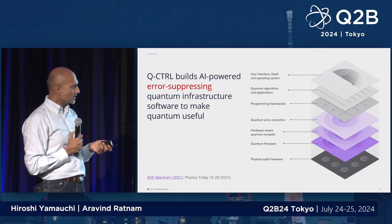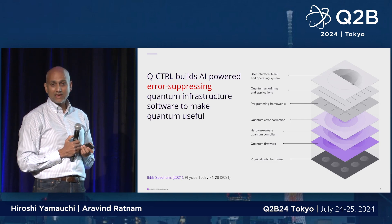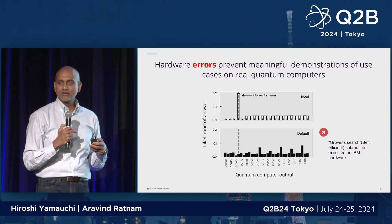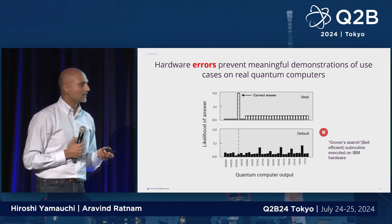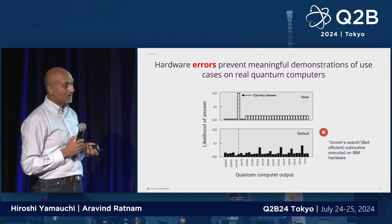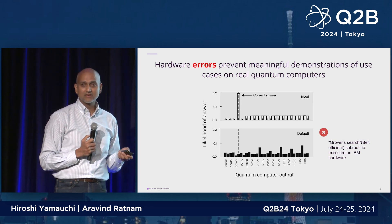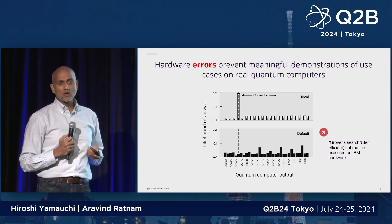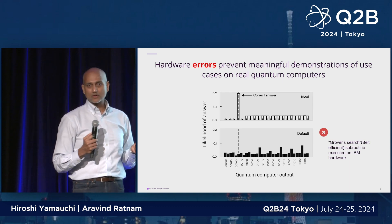This includes the quantum firmware, compilation, and error correction methods. The reason we did all that was to solve one problem that afflicts the whole quantum computing industry: there are hardware errors that impede meaningful demonstrations to be conducted on real world quantum computers. And this is almost holding back the whole quantum computing sector.